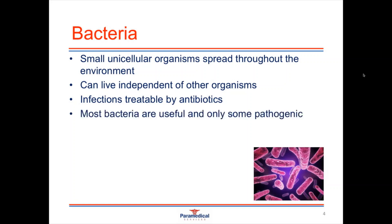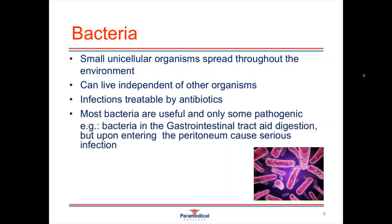Most bacteria are actually very useful and only some are pathogenic. We have millions of bacteria living on our skin and throughout our digestive tract, which are very helpful. For example, bacteria in our gastrointestinal tract are important for aiding digestion, but if they move out of the digestive tract into the peritoneum they can cause a very serious infection. Similarly, bacteria in our oral cavity serve an important function, but if that bacteria goes to the lungs it can cause bacterial pneumonia.